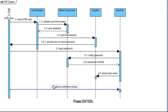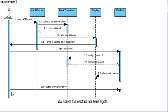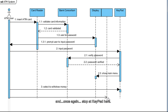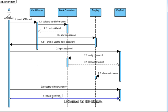After that, the user is going to have to specify the amount to withdraw. Select the vertical bar here again, drag the Message to Lifeline icon to the right, and once again stop at Keypad. For the message, put in Input the Amount and press Enter. You're done up to right before step 5.